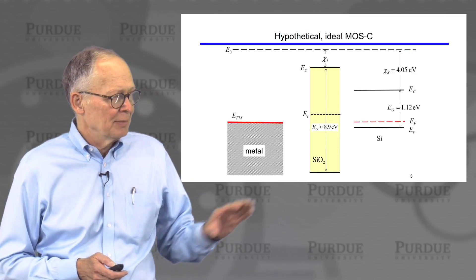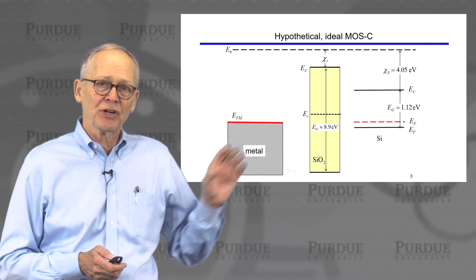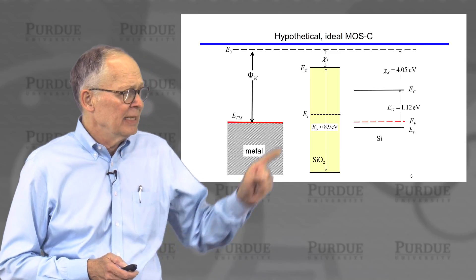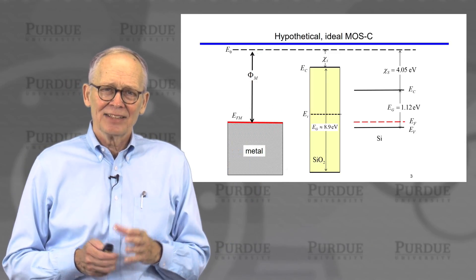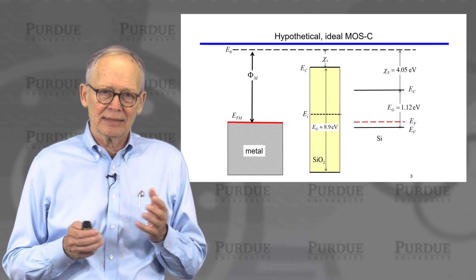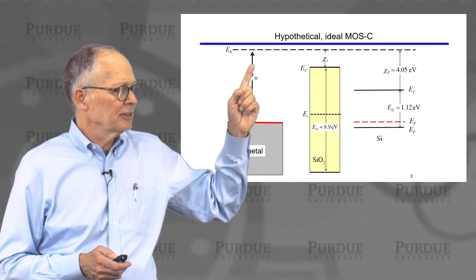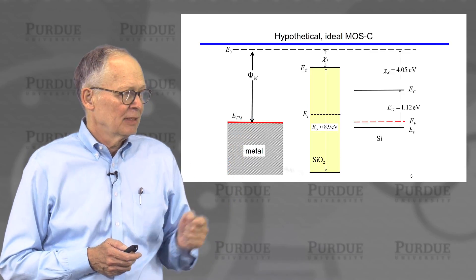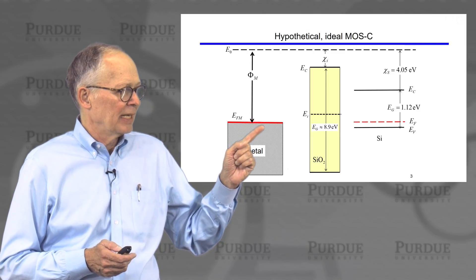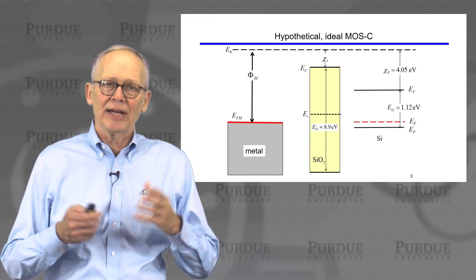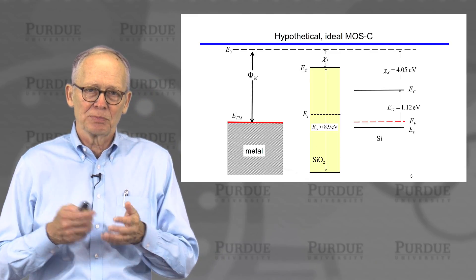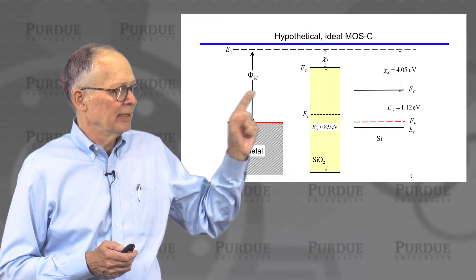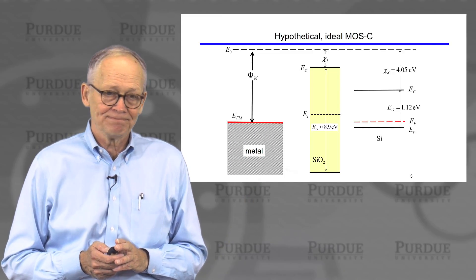That doesn't really happen because if I take any metal, its Fermi level will be somewhere. The way that we measure the position of that Fermi level is with respect to a reference energy level — the reference we usually take is the vacuum, E zero. The distance between E zero and the Fermi level is the work function of the metal. If I were to shine light on the metal and eject an electron from the Fermi level into the vacuum and detect it, I would have to shine light with a frequency that gives me an energy of phi sub m, the work function.